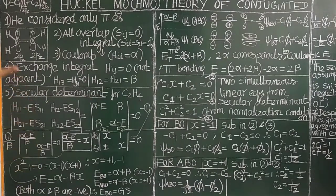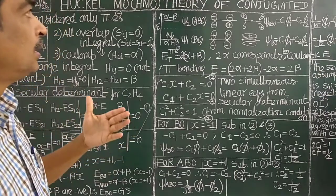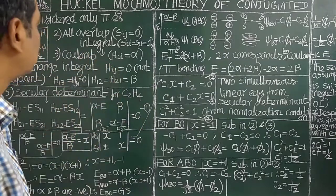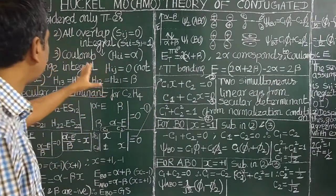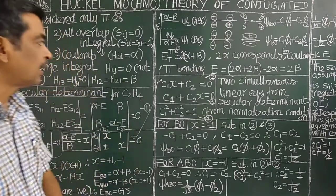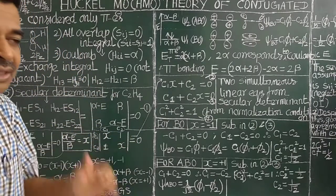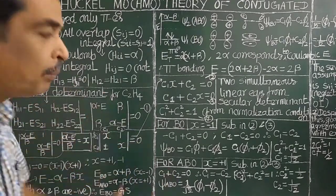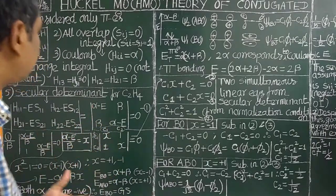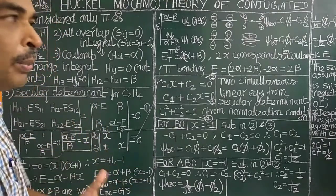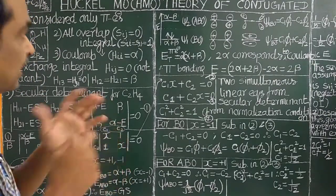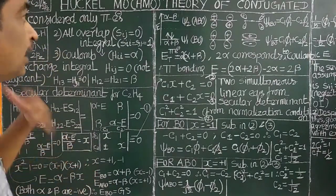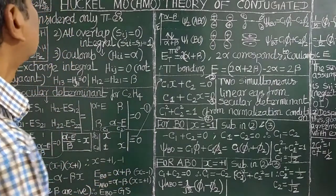Before studying HMO theory, you should study molecular orbital theory, including the overlap integral, Coulomb integral, exchange integral, and the secular determinant. We have derived the secular equation and studied molecular orbital theory. Please watch the lesson on molecular orbital theory first, then you will be able to easily understand HMO theory.